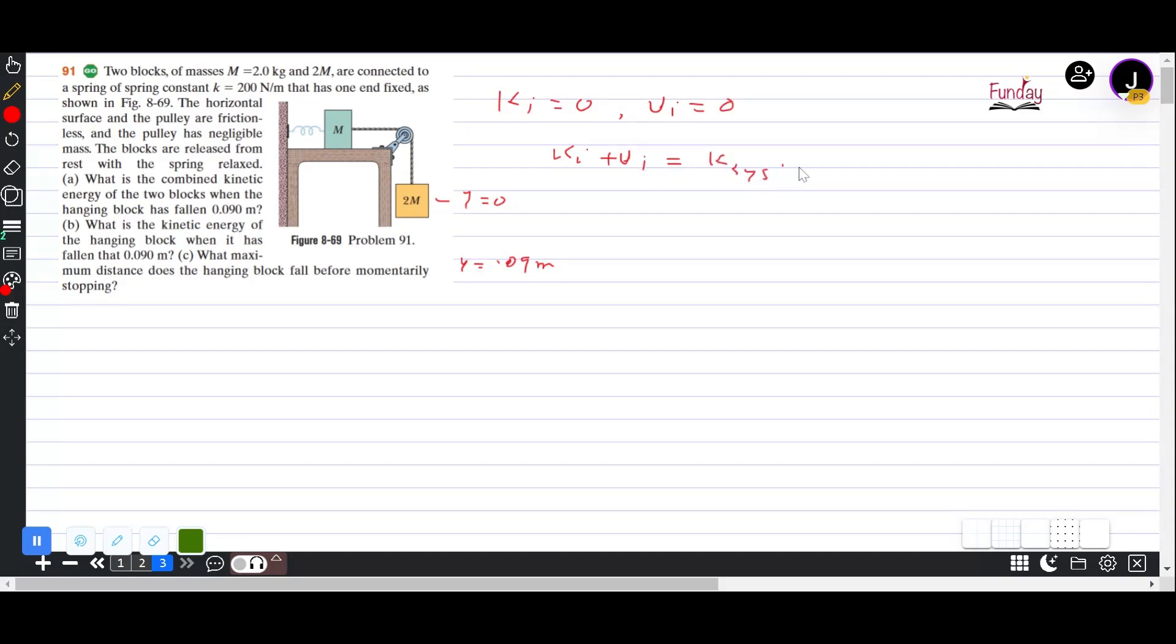K system plus U system at any given point. So we are talking of at 0.09 meters. What is the K system? That is kinetic energy of the system of the two blocks M and 2M.